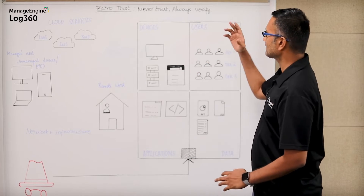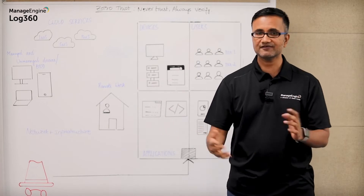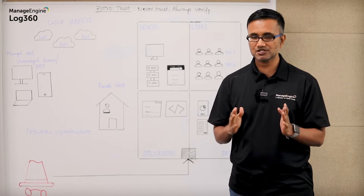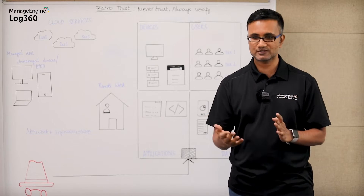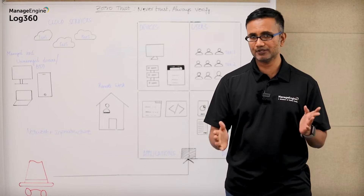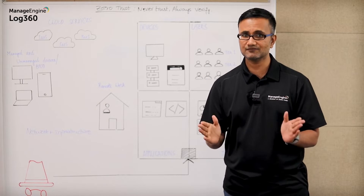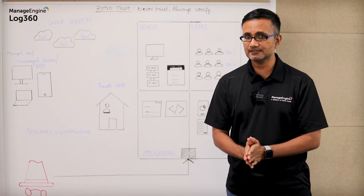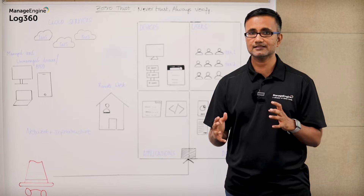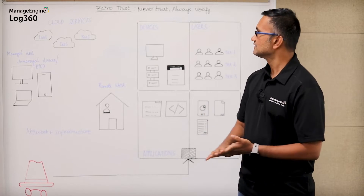When we look at the 'always verify' part of the philosophy, we are making sure that verification is an ongoing, continuous process. You can't just authenticate a particular user and authorize that same user and then be done with it. You've got to constantly authenticate and re-authenticate the user to make sure that they are only getting their hands on what is actually entitled to them.